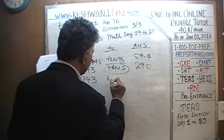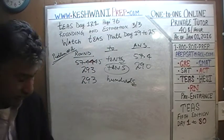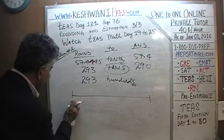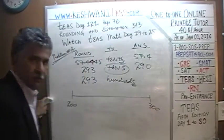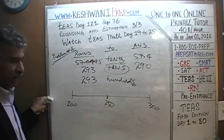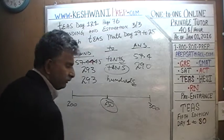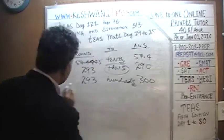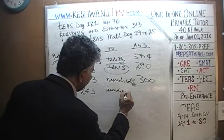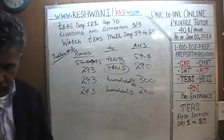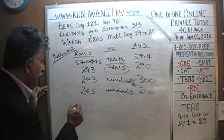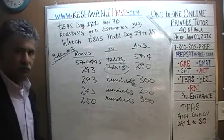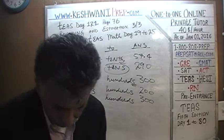What if you were asked to round 293 to the nearest hundreds? Now we count by hundreds. On the number line, 200 is here and 300 is here, with 250 in the middle. 293 is even closer to 300. So 293 rounded to the nearest hundred becomes 300. By contrast, 243 rounded to the nearest hundred would be 200, because 243 is closer to 200 than to 300. And 250 rounded to the nearest hundred becomes 300 because the rule is: if it is 5 or more than 5, you round it up.